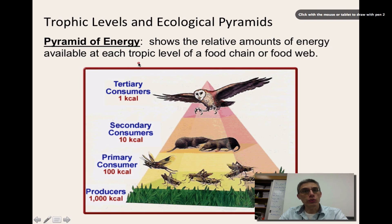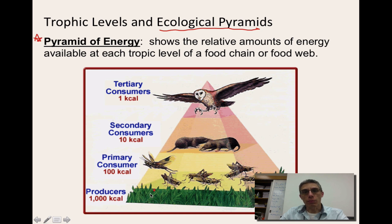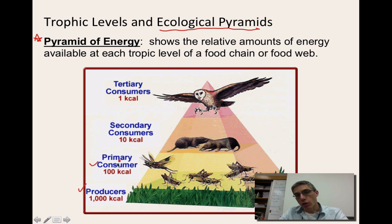Food chains and food webs demonstrate the idea of the flow of energy, but we also need to think about how much energy is actually being transferred to each organism as things are being eaten. To show this, we create something called an ecological pyramid — more specifically, a pyramid of energy. We give each of the different levels within the pyramid a special name called a trophic level. The words producer and consumer are used here as well.